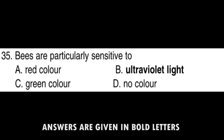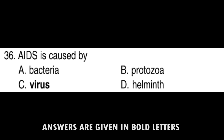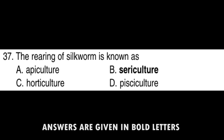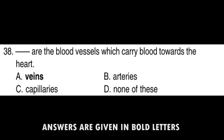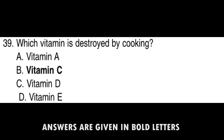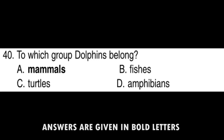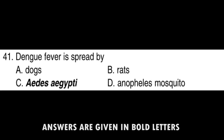Bees are particularly sensitive to UV light. AIDS is caused by Virus. The rearing of silkworm is known as Sericulture. The blood vessels which carry blood towards the heart are Veins. Which vitamin is destroyed by cooking? Vitamin C. To which group do dolphins belong? Mammals.